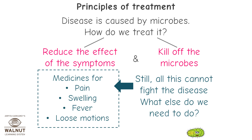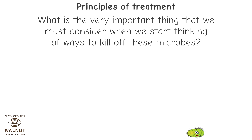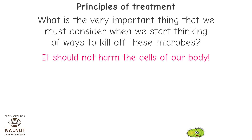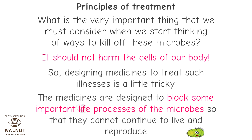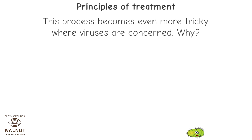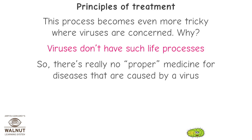We need to kill off the microbes. There are different attacks for different kinds of enemies — for example, antibiotics for bacteria. The very important thing to consider is that the medicine should not harm the cells of our own body. So designing medicines to treat such illnesses is a little tricky. The medicines are designed to block some important life processes of the microbes so they cannot continue to live and reproduce. This becomes even more tricky where viruses are concerned, because viruses don't have such life processes. So there is really no proper medicine for diseases caused by a virus.